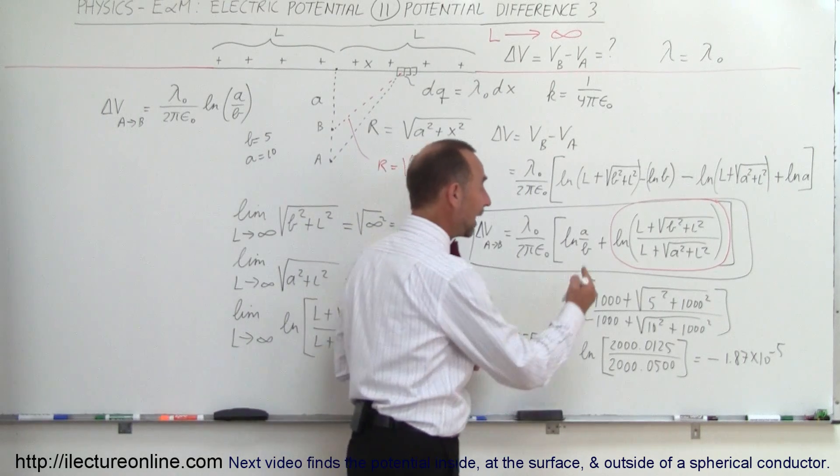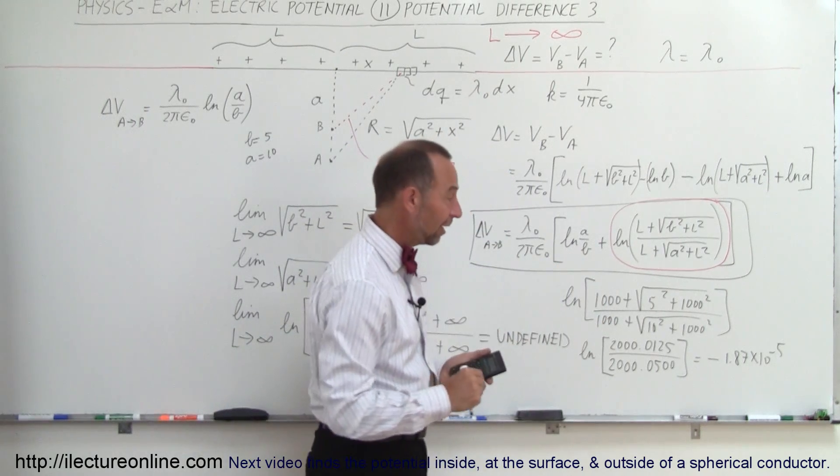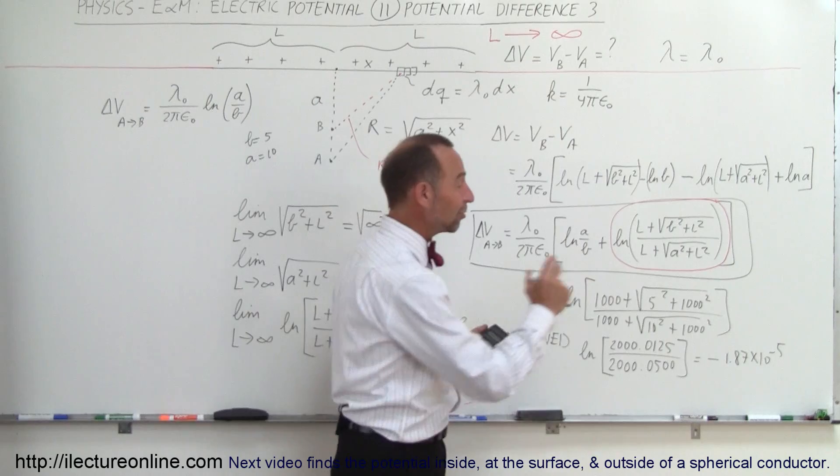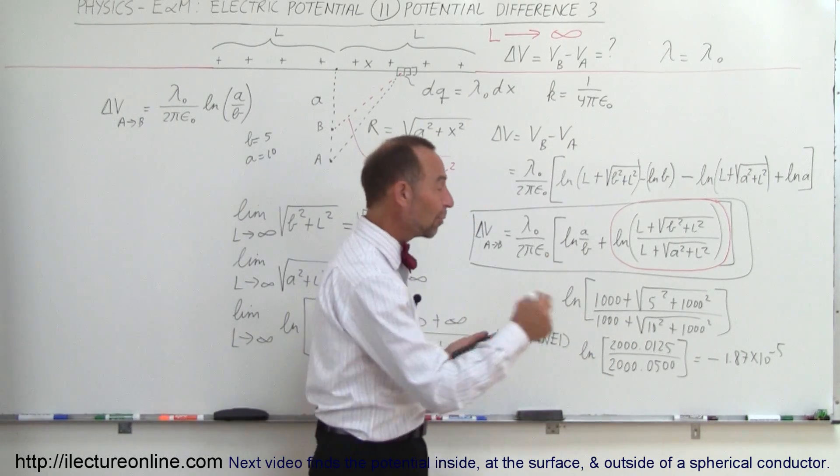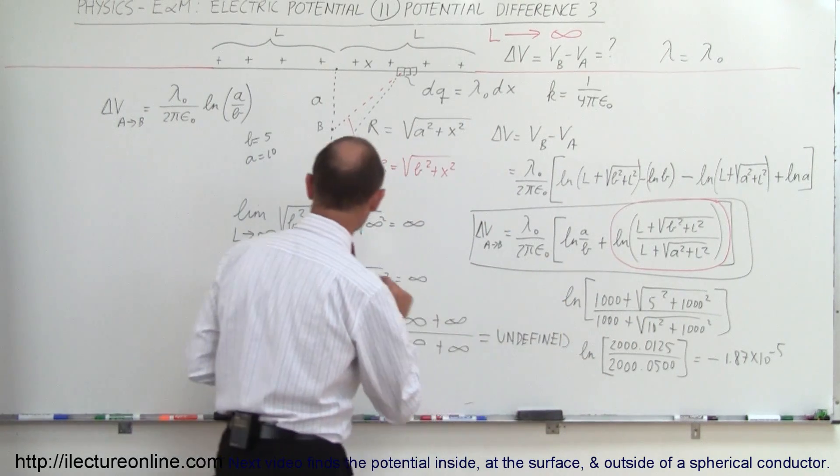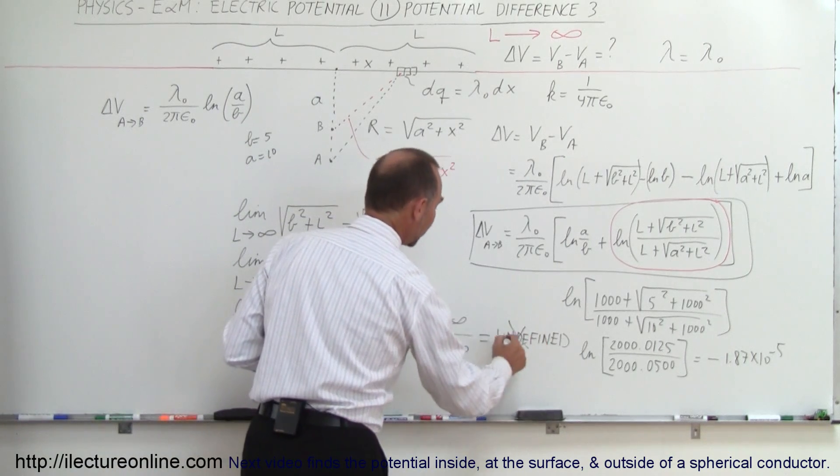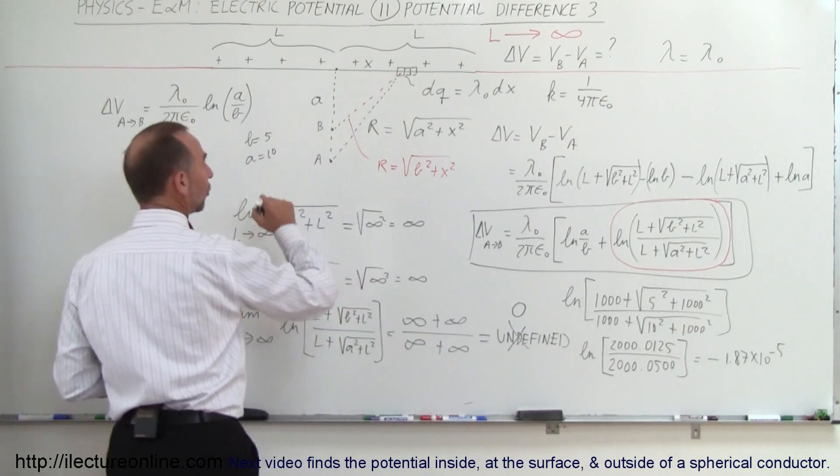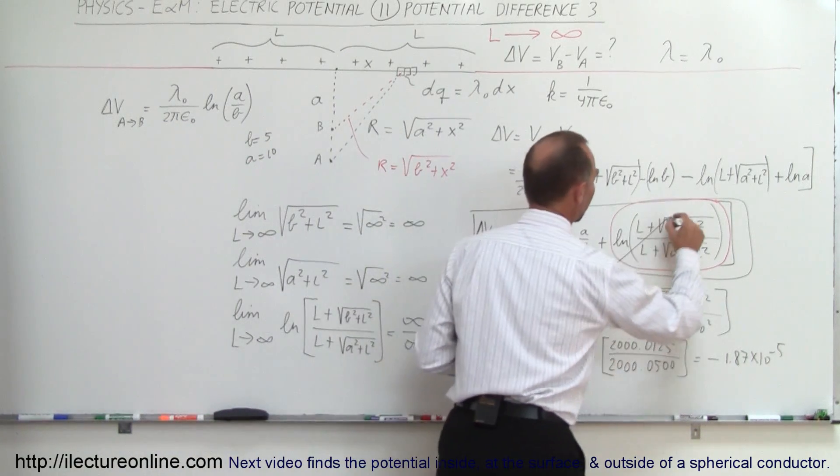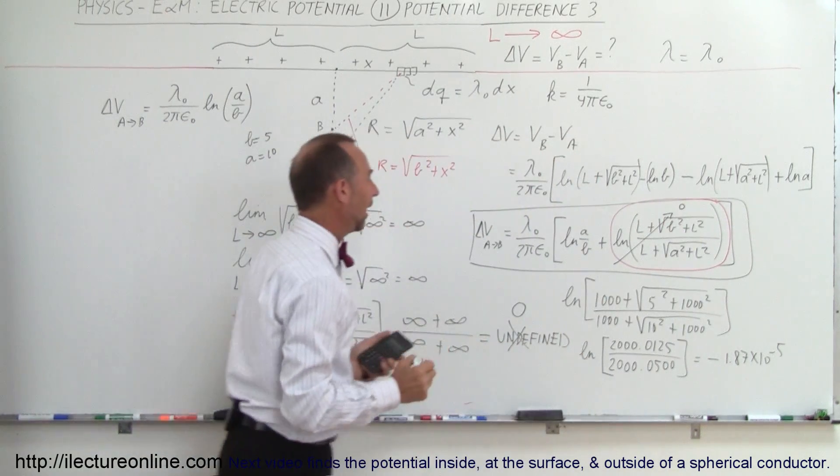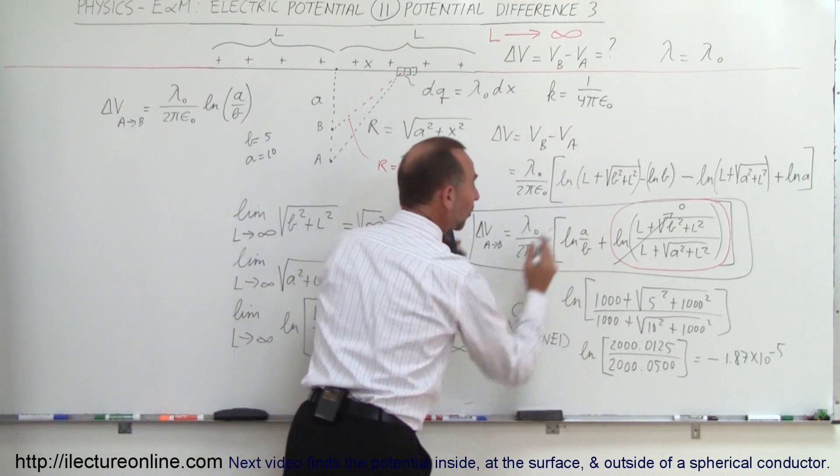Now, if we continue that, if we now let L be a million instead of a thousand, then we get a number that is much, much smaller than that, and if we make it a billion, it's much, much smaller. So you can see that in the limit, even though it appears to be undefined, in the limit, it becomes equal to zero, and this whole term right here simply drops out, and the answer converges to this answer right here.